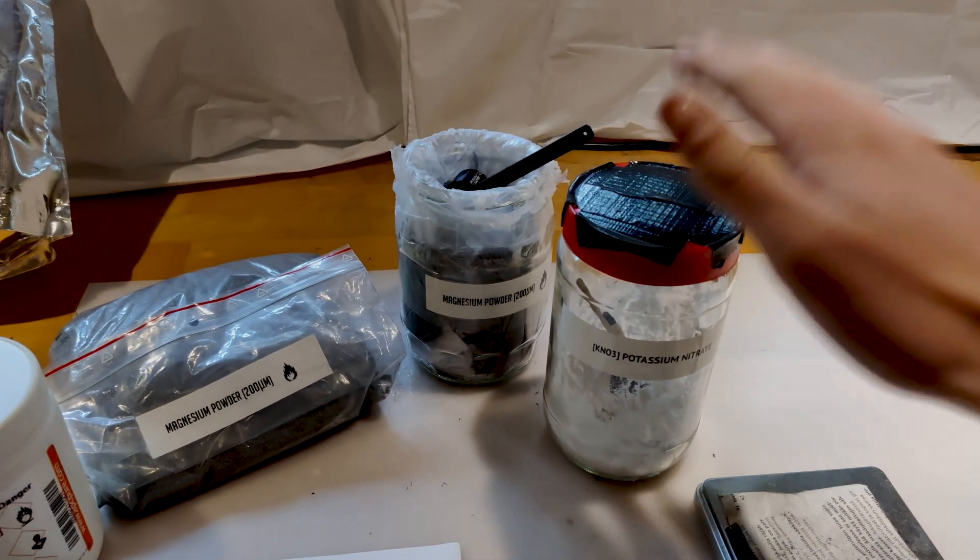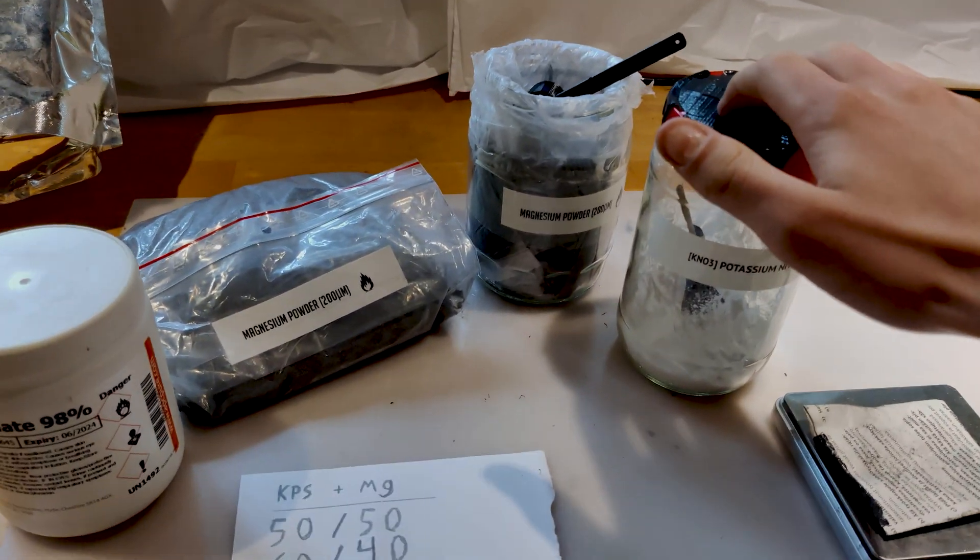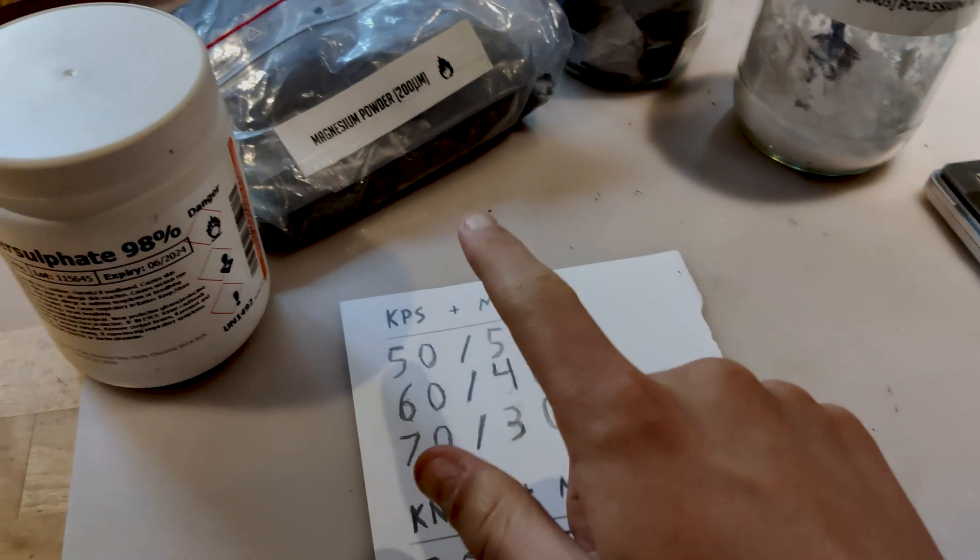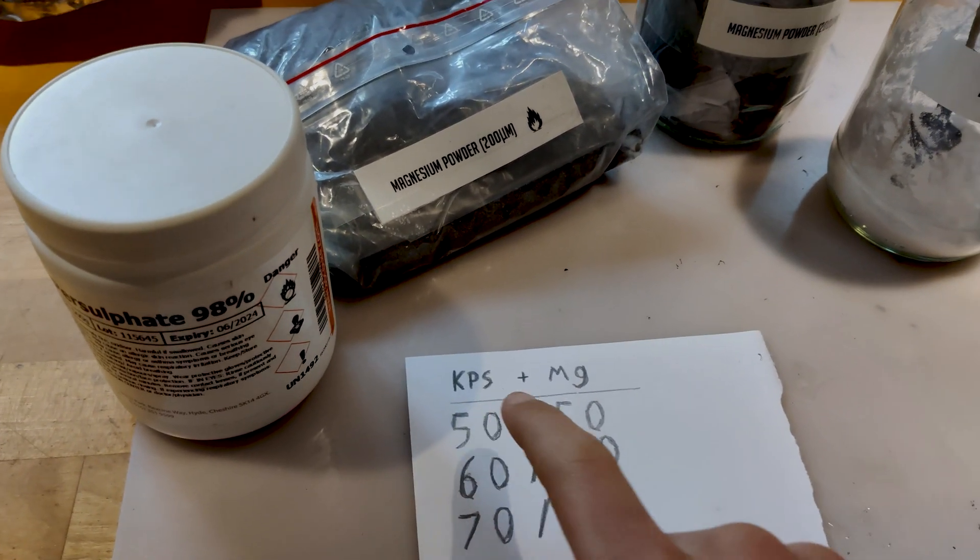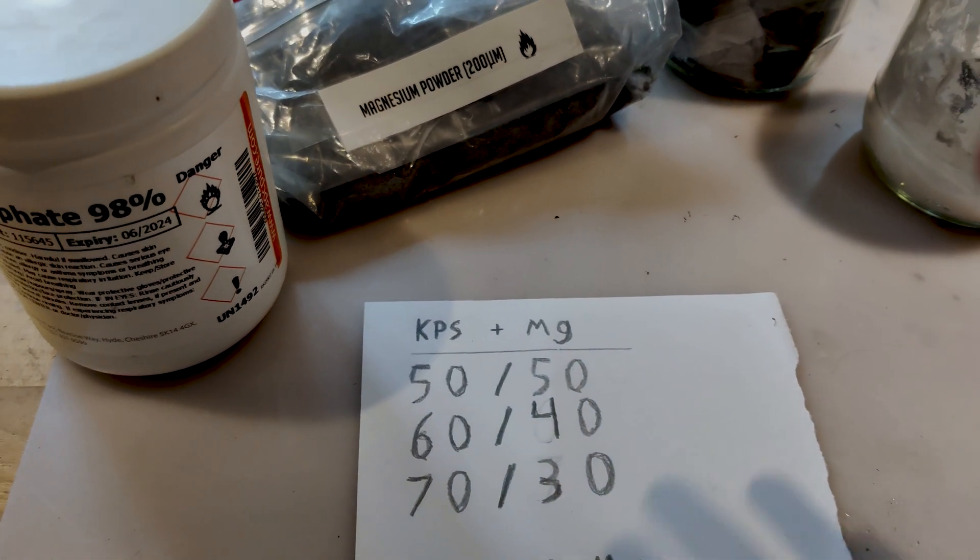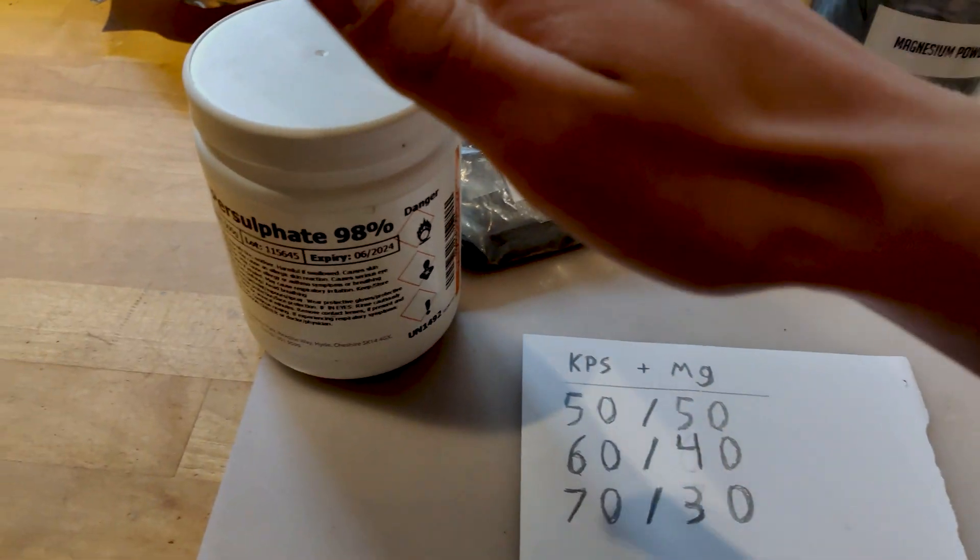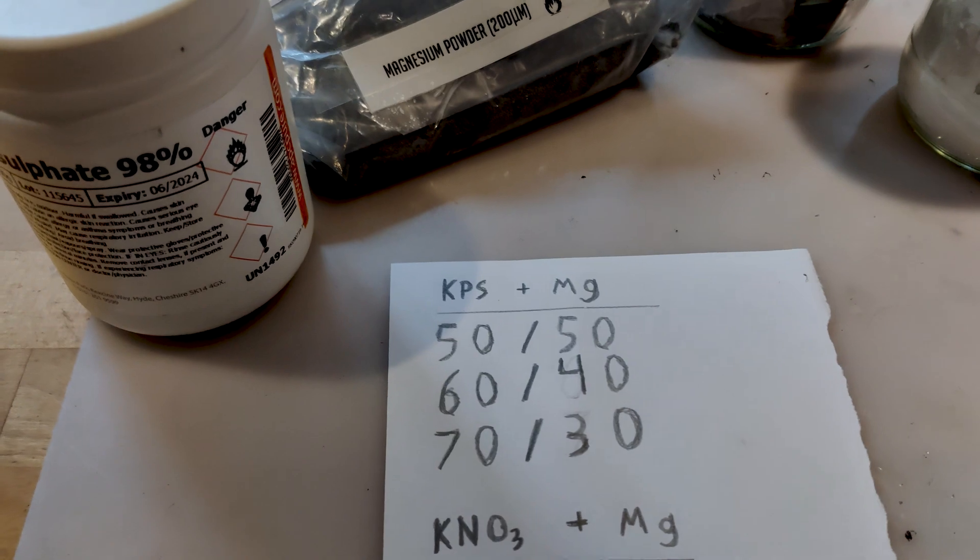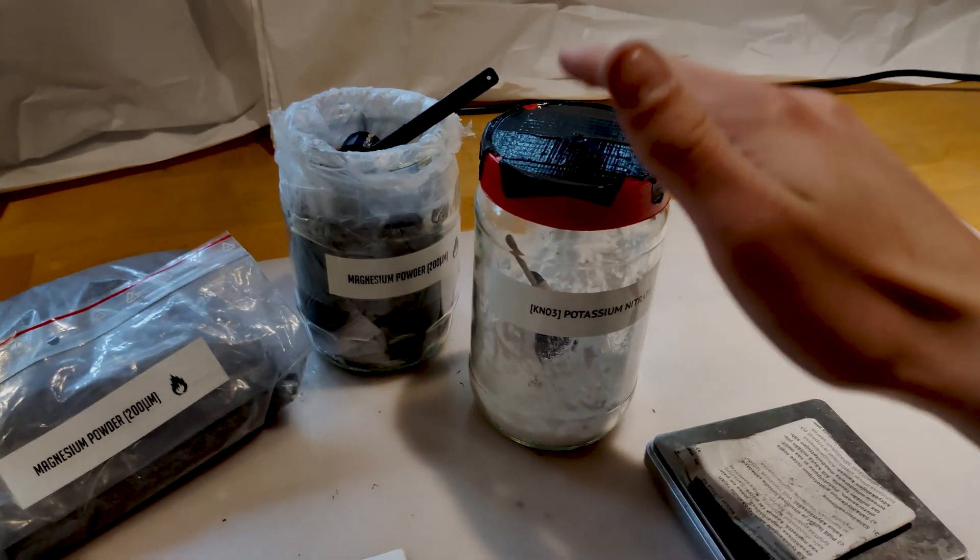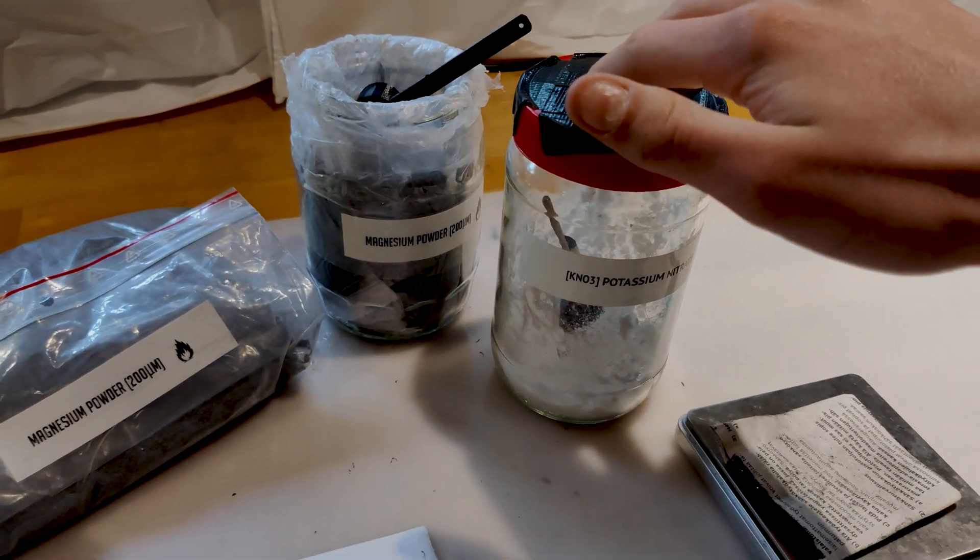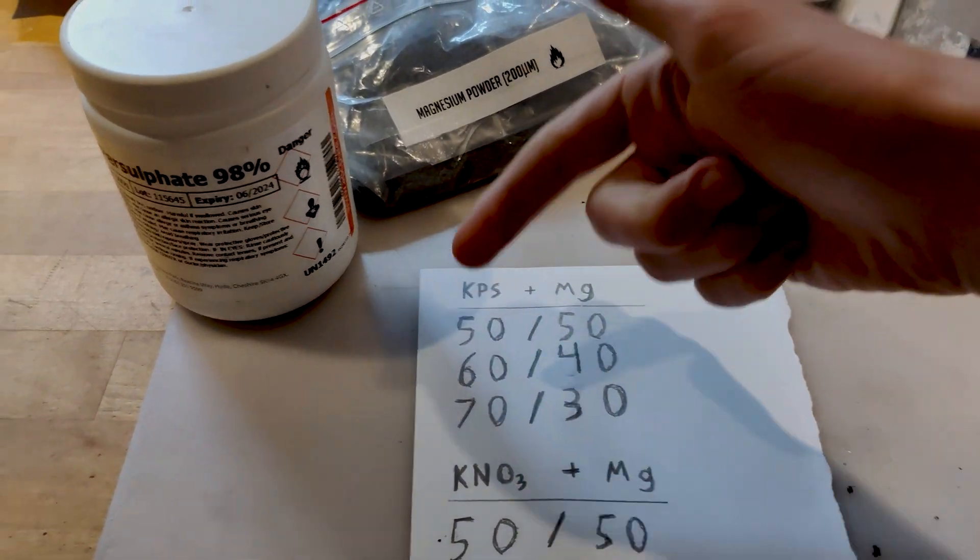Now I'll show you the most effective ratios for these flash powders. First being for the potassium persulfate, which I'll just call KPS. All these ratios work very well, just make sure that your potassium persulfate is as dry as possible. The same goes for the potassium nitrate. As you can see we have 50/50, we have 60/40, and we have 70/30.